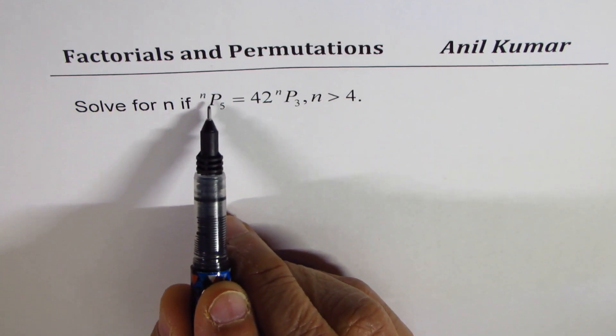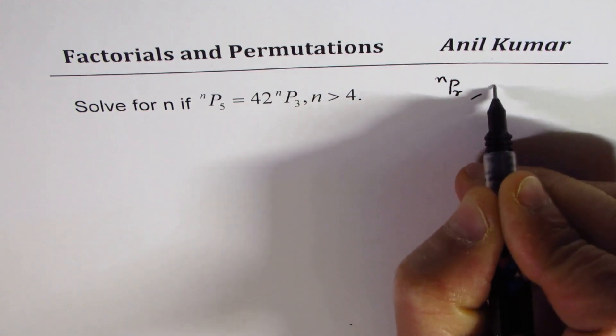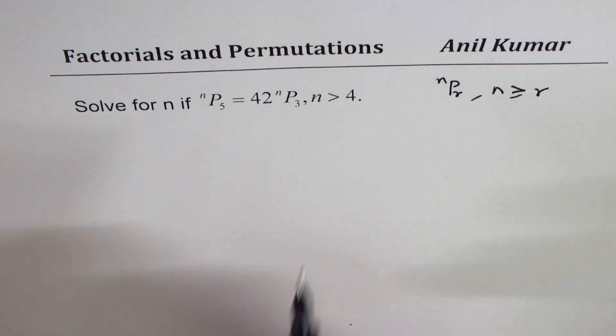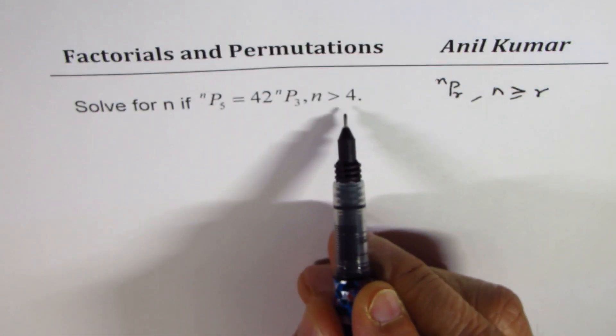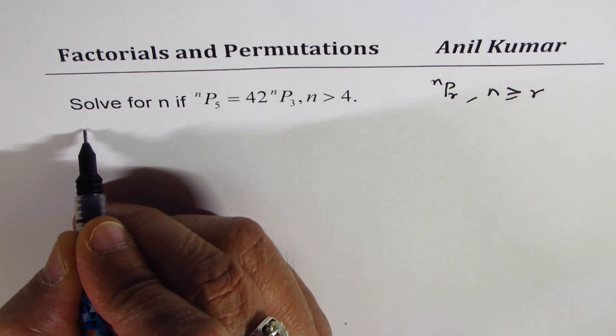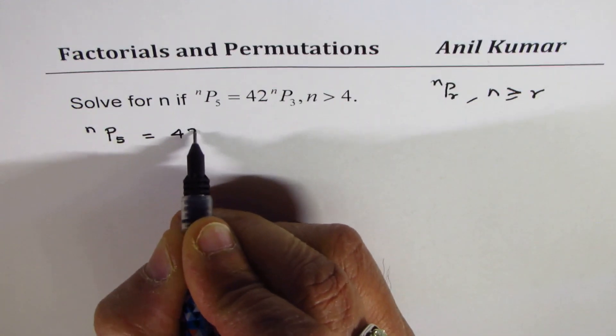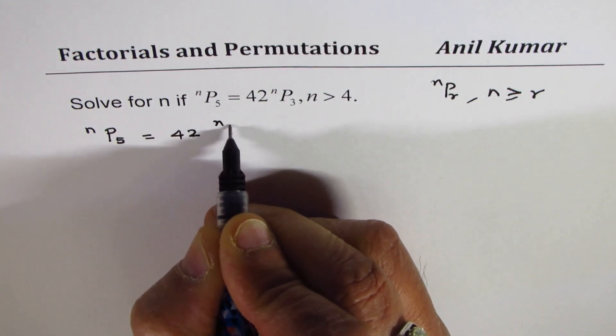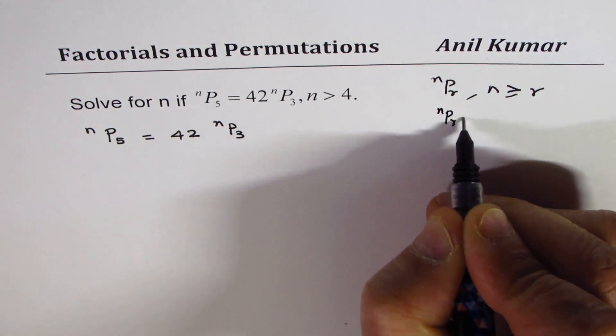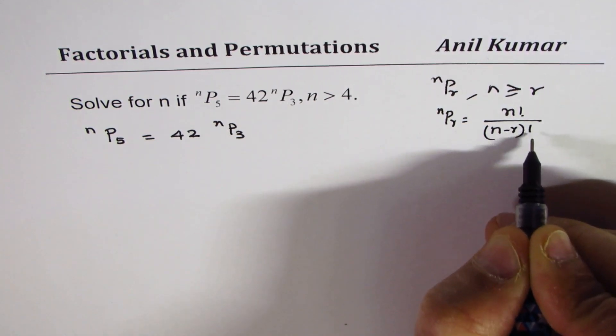Now whenever you have nPr in general, n is always greater than or equal to r. You should remember that, so at times we may not write this condition. Now let us solve for n. What we are given here is that nP5 equals 42 times nP3. nPr in general is n factorial divided by (n-r) factorial.